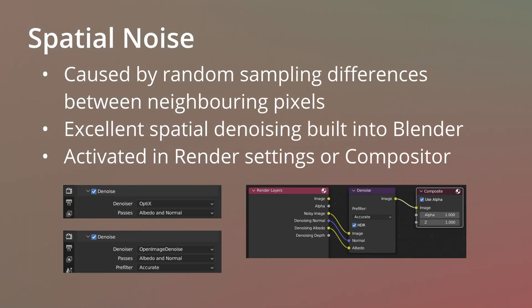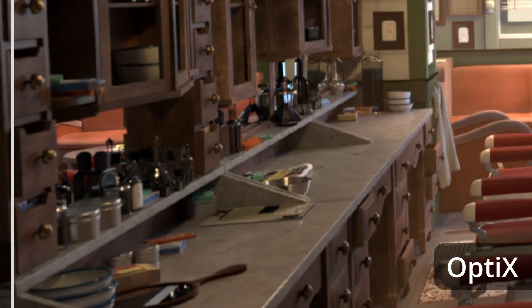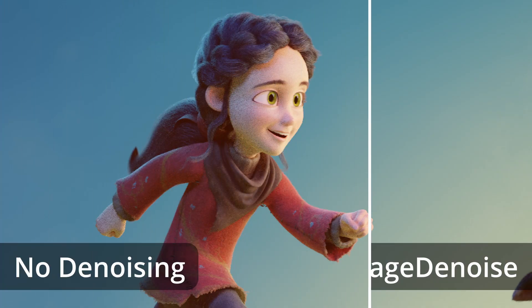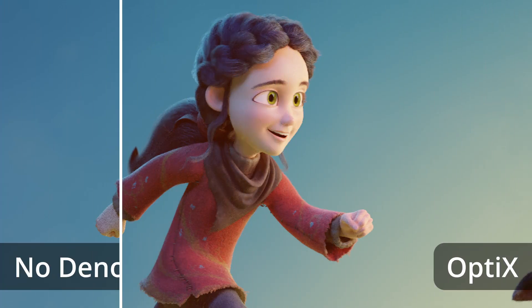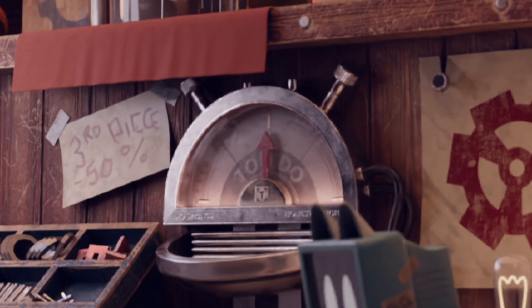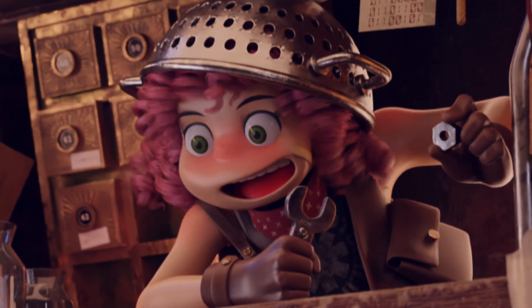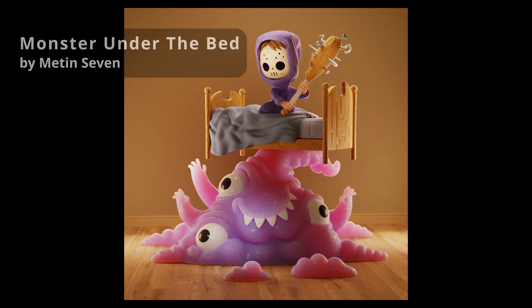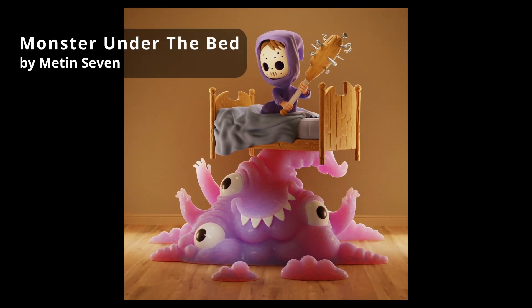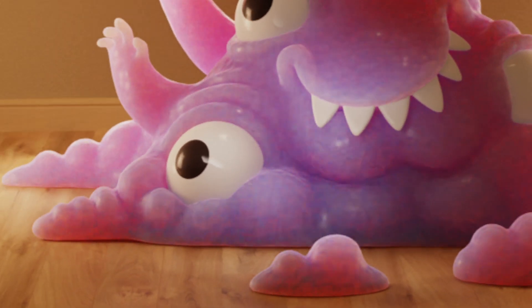The denoisers built into Blender perform spatial denoising so you don't have to wait forever. Spatial denoisers smooth out the differences between neighbouring pixels and do an amazing job to clean up noise while still retaining details. However, a seemingly perfect denoised image can exhibit artefacts like flickering and shimmering when used in an animation, and sometimes spatial denoising exacerbates the problems in video.